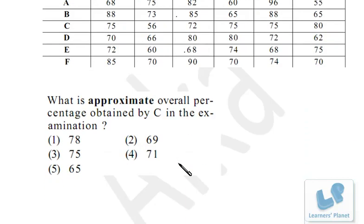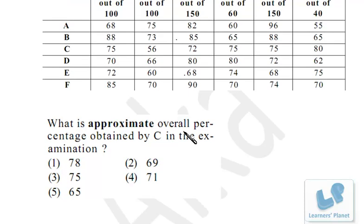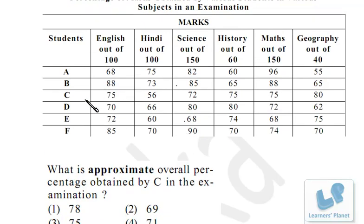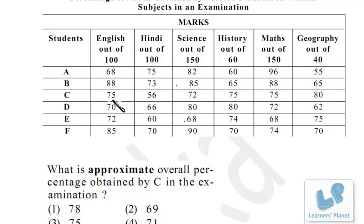The first question is: what is the approximated overall percentage obtained by C in the examination? The data for C are already given in percentage: 75, 56, 72, 75, 75, 80. We have to find the overall percentage, which means adding them all up and dividing by 600 into 100 — essentially finding the average of all six data points.